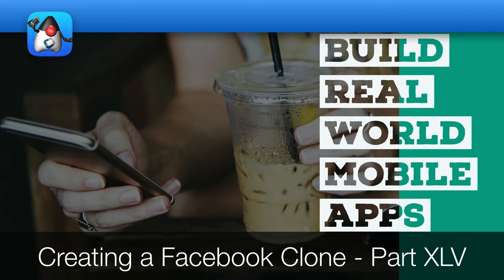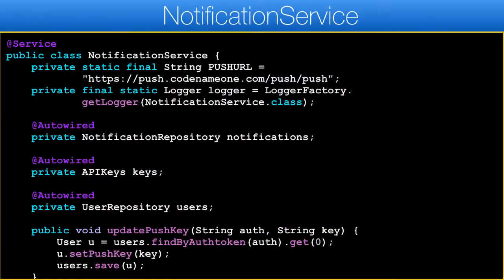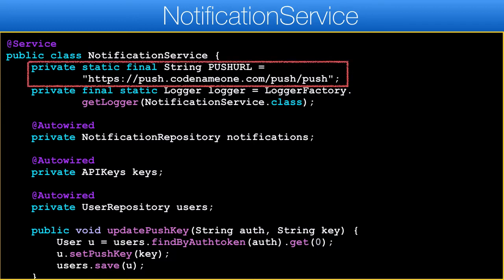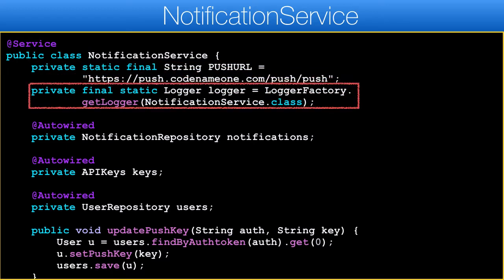The changes to the notification service are significant — it's the class that implements push notification calls from the server. Before we start, we need to add a few fields to the class; these will be used by the code we introduce soon, besides the keys field mentioned before. This is the URL of the Codename1 push server, which we'll use to send out push messages. Logging is used for errors in the body of the class.